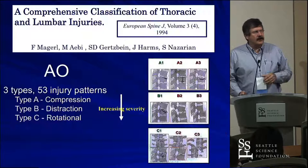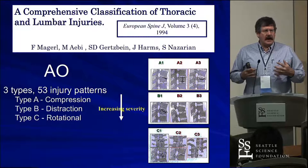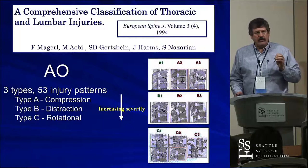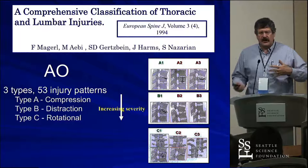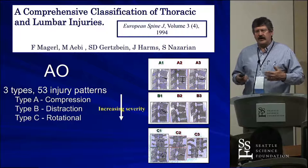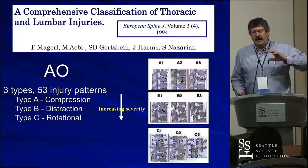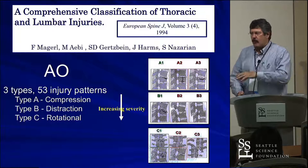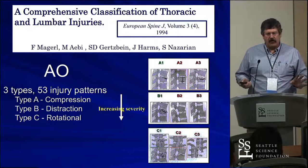The AO classification expanded upon this. In typical AO fashion, it made an ABC: A is not as bad as B, as bad as C. A was the compression injuries, B were the distraction injuries, and C were the translational rotation injuries or fracture dislocations. It was fairly simple and reliable in inter-observer and intra-observer reliability. However, they wanted to make it better for scientific studies, so they broke it down into all these subgroups — 53 injury patterns. Once you got to A3.3, 4, 5, nobody understood it and the intra-observer reliability completely broke down.